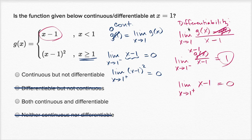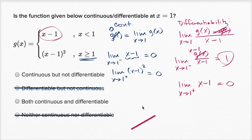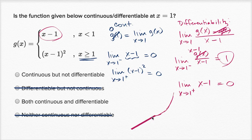Notice you get a different limit from the left hand side versus the right hand side in this definition of the derivative. That makes sense — the graph has a slope of one coming in, then right when x equals one the slope becomes zero as we leave that point. So the graph is continuous, but our slope coming into that point is one and leaving is zero. Therefore it is not differentiable there. The answer is: continuous but not differentiable.